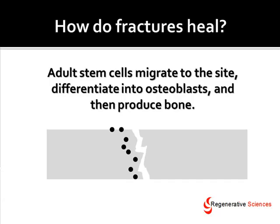How do fractures heal? That's really the important question if we're going to be discussing fracture nonunion. Fractures heal by adult stem cells migrating to the site, differentiating into osteoblasts, and then those osteoblasts producing bone. Basically, you have adult stem cells located in your bone marrow and in the periosteum, or on the outer side of the bone, and those go into the fracture site and turn into bone-producing cells.